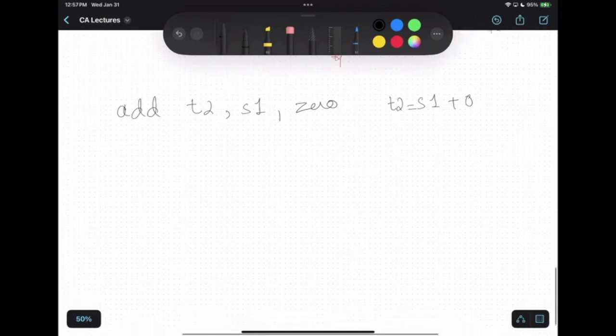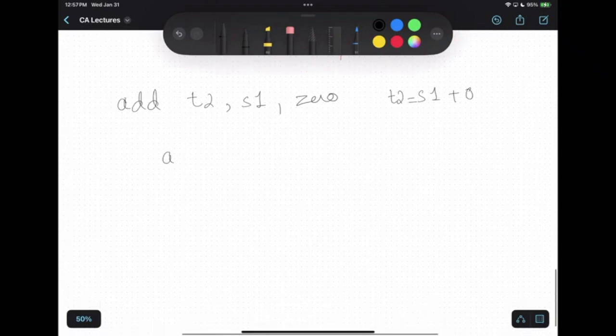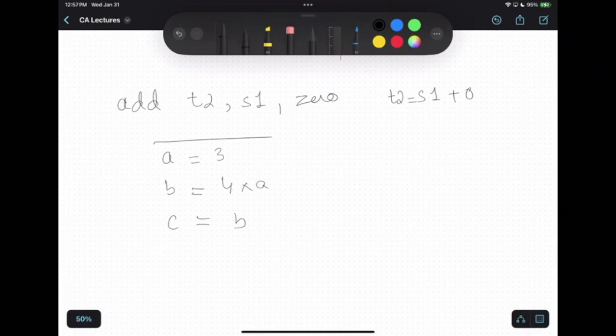It is similar to a Python snippet like A equals 3, B equals 4 times A, and C equals B. You want to assign the value of this variable into another variable named C. This is how you do it with the help of zero register.